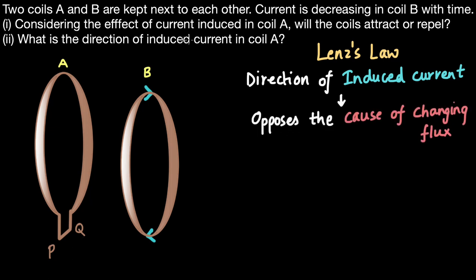The effect of the current induced in coil A would be to try and minimize the change in flux. So first, let's focus on the cause of changing flux. If we think about the magnetic flux linked with coil A, that must be due to the magnetic field lines passing through this coil — and those field lines are coming from coil B, which has a current flowing through it.